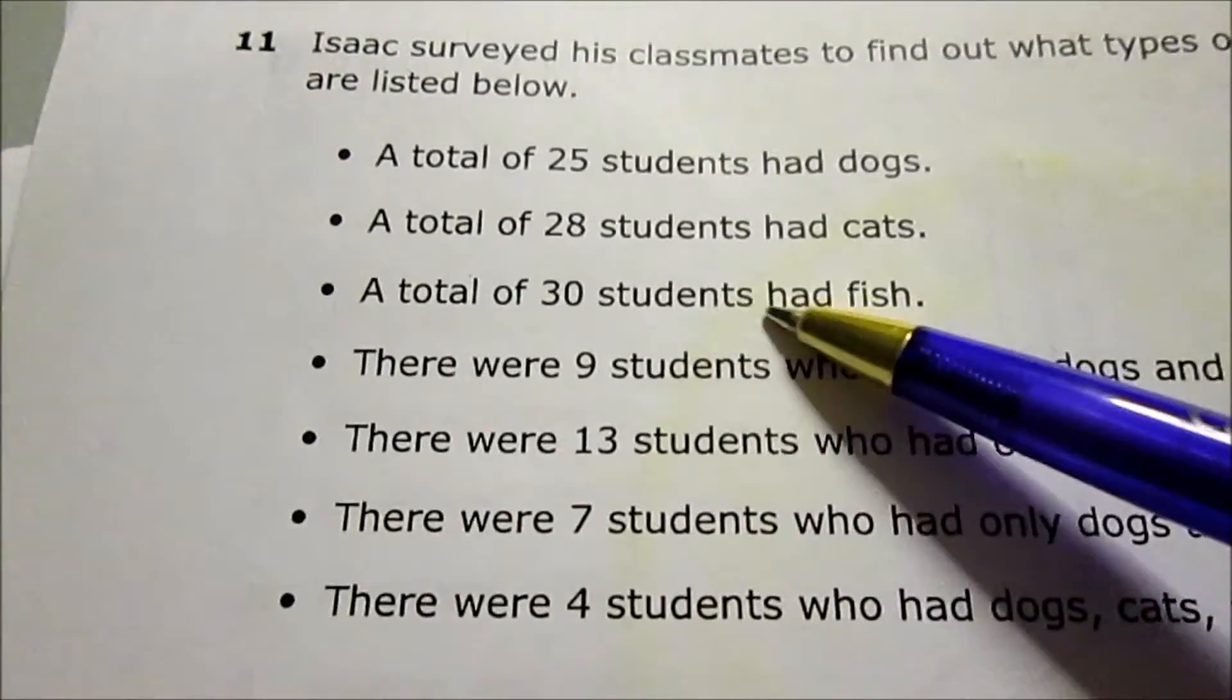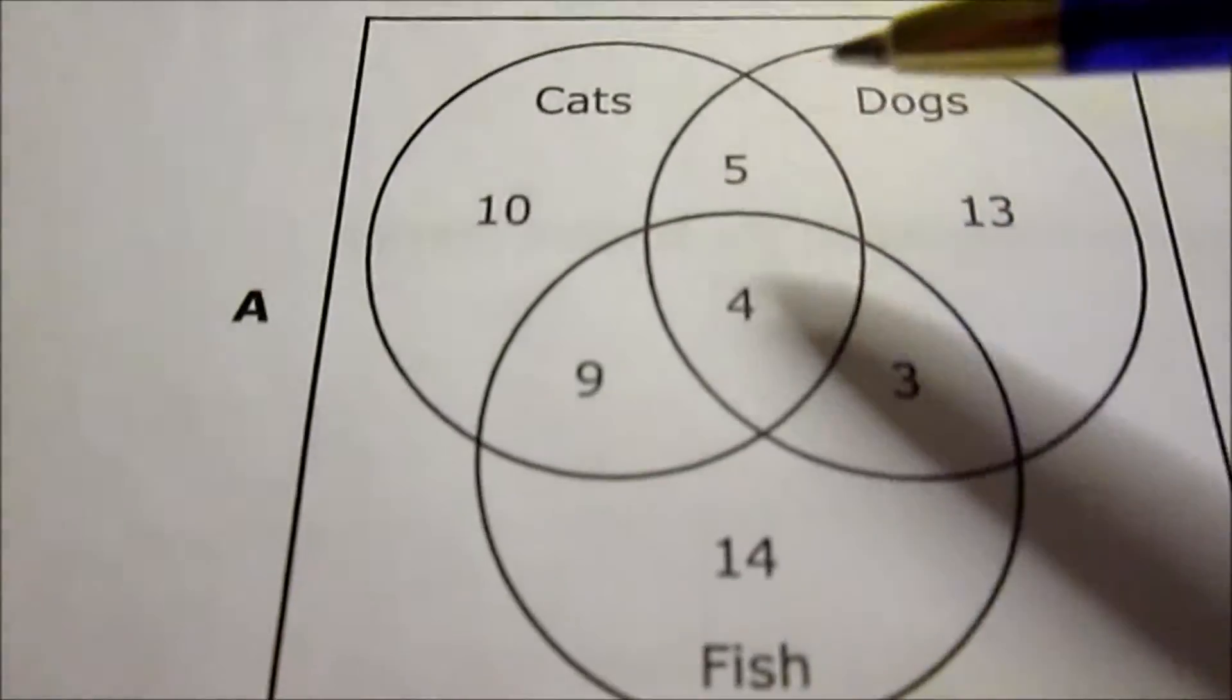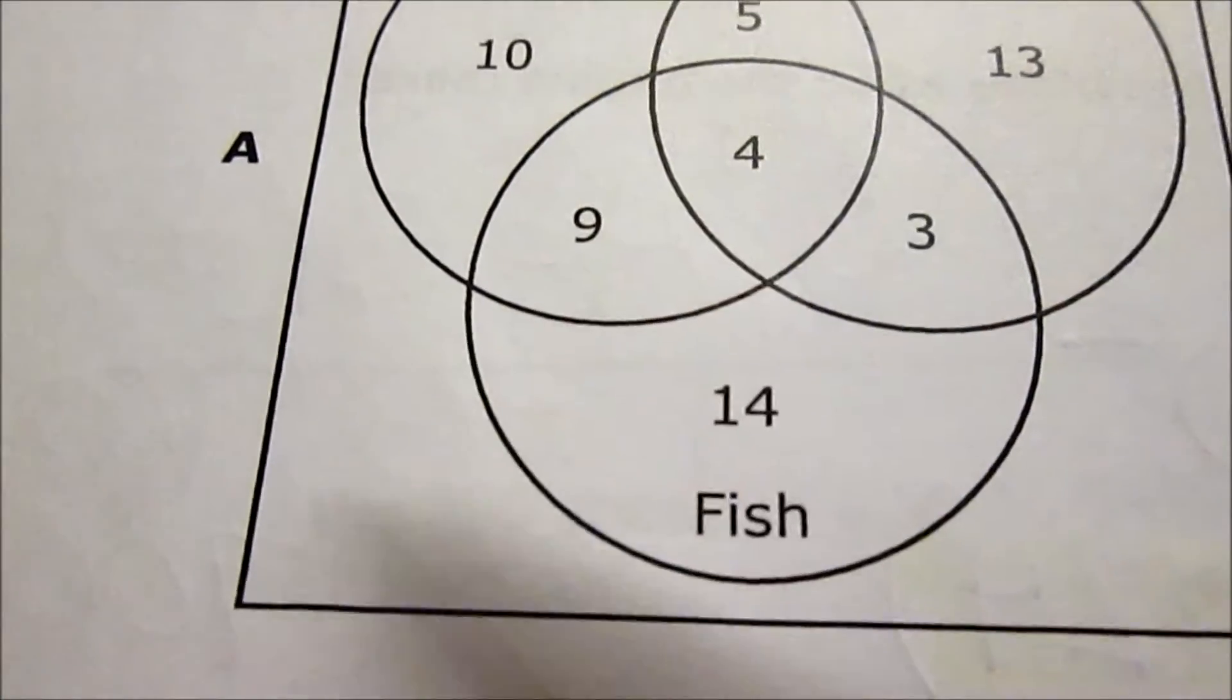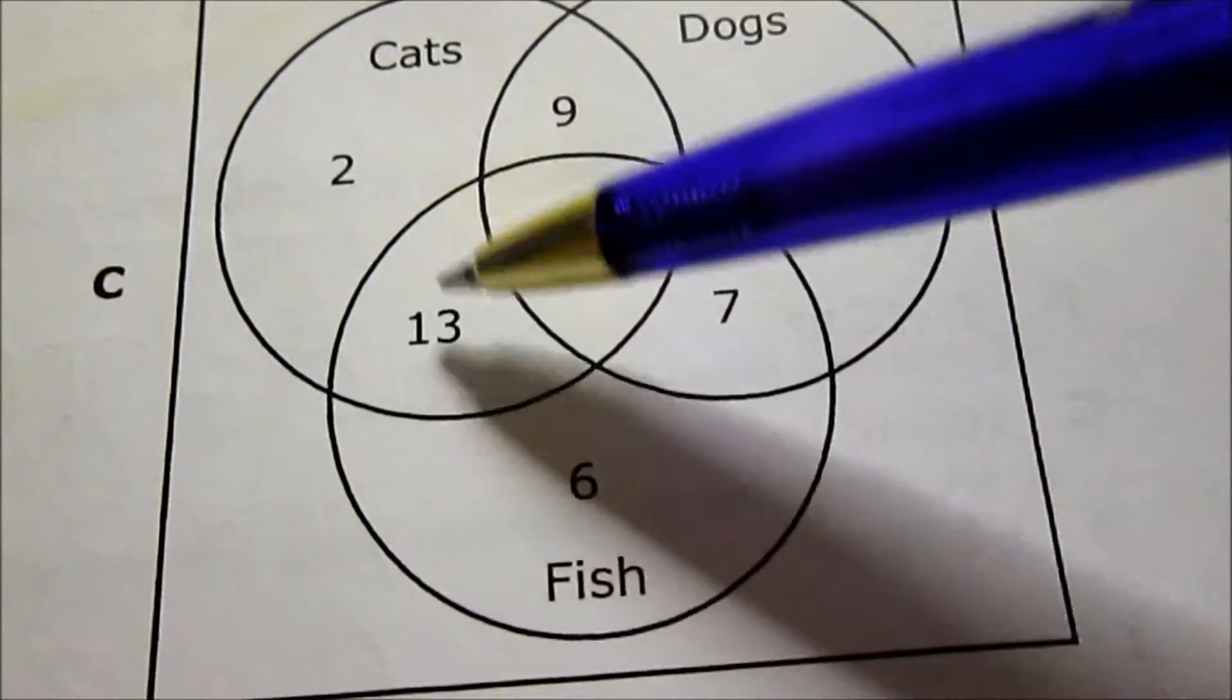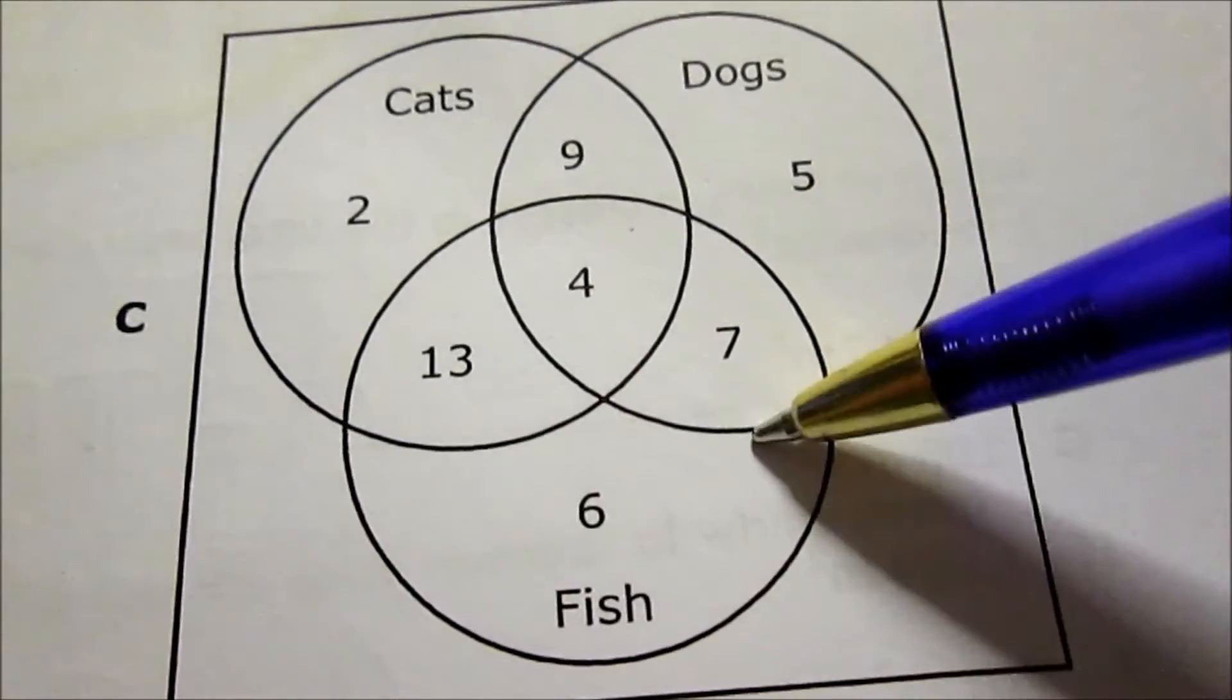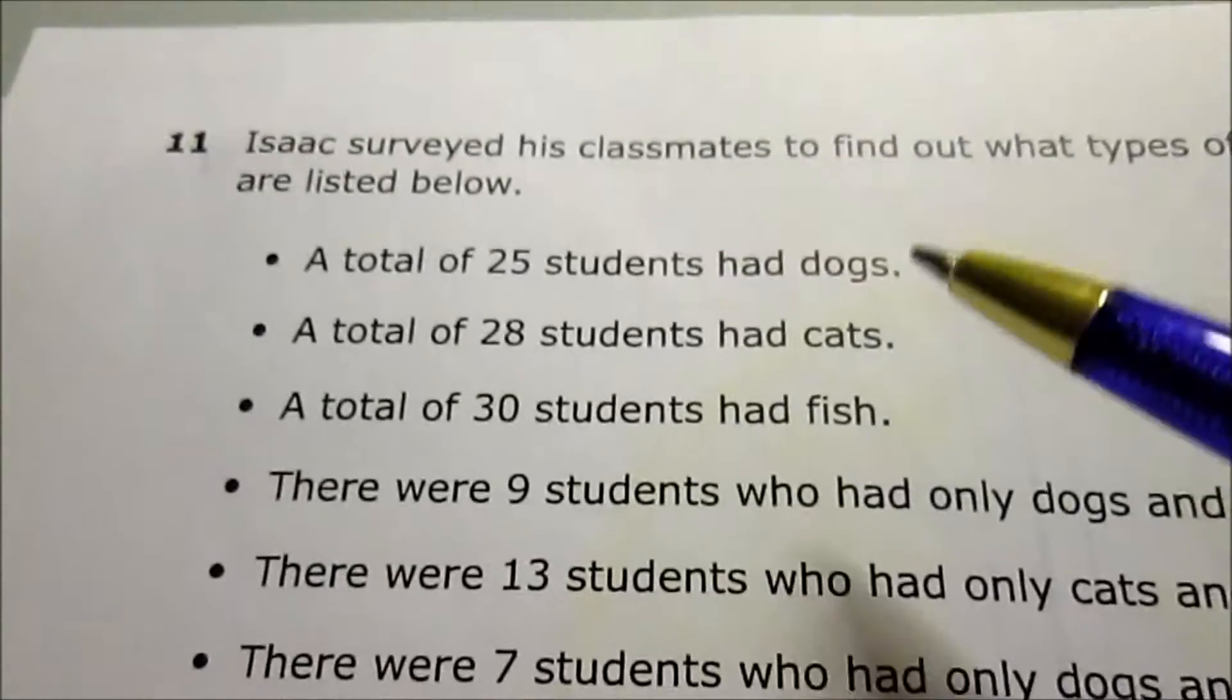Next piece of information: 30 students had fish. For A, fish: 14 plus 9 is 23, plus 4 is 27, plus 3 is 30. For C: 16 plus 13 is 19, 19 plus 4 is 23, 23 plus 7 is 30. That's still good.